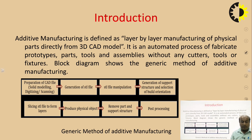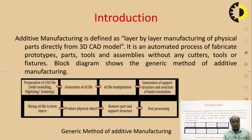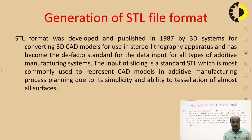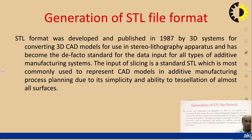There are two main steps required for additive manufacturing. The first is the generation of the STL file. Then, slicing of the STL file to form the layers. Today, we will discuss about the generation of STL files and the slicing of STL files. So, first, we have to discuss the generation of the STL file format.